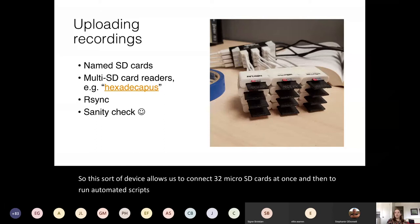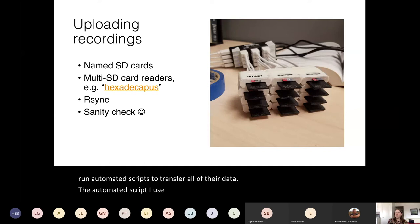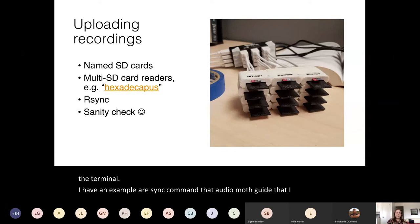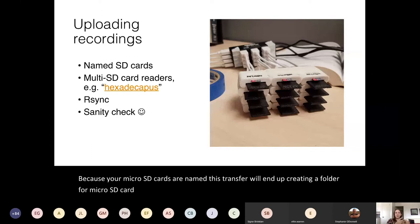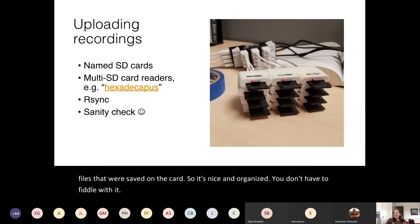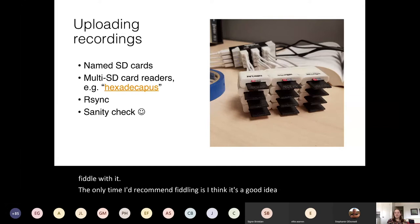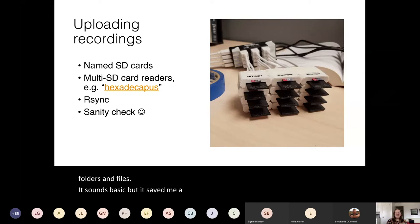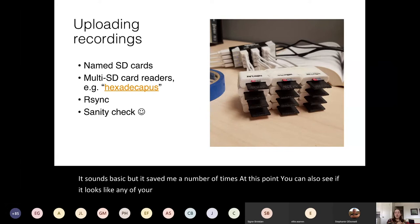The automated script I use is a program called rsync, which you access through the terminal. I have an example rsync command in the AudioMoth guide I mentioned earlier. Because your micro SD cards are named, this transfer will create a folder for each micro SD card named after the card with its ID, containing the files saved on the card — nice and organized. I recommend double-checking after a transfer that it actually created the expected amount of folders and files. At this point, you can also see if any of your recorders failed or were programmed incorrectly.